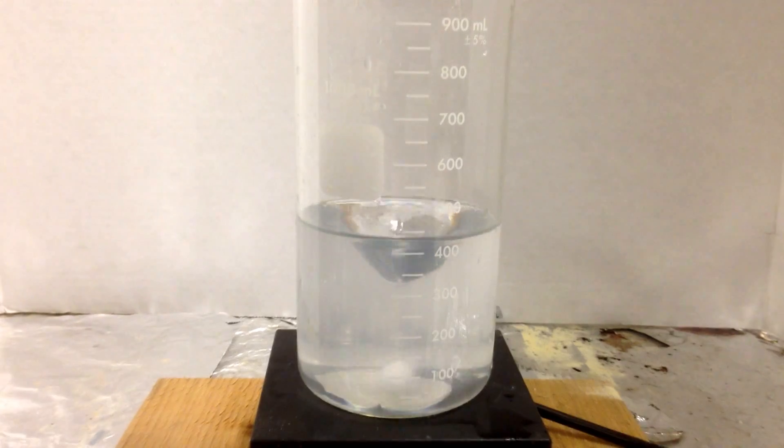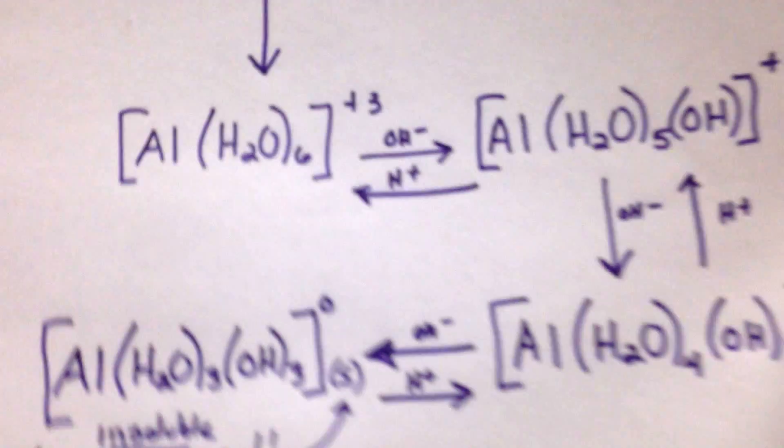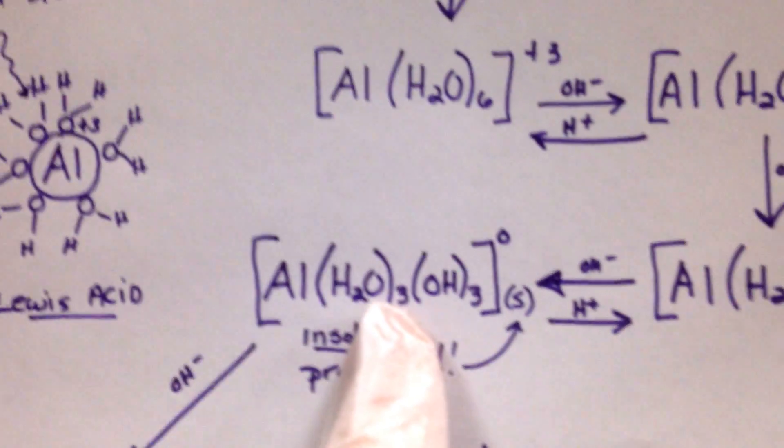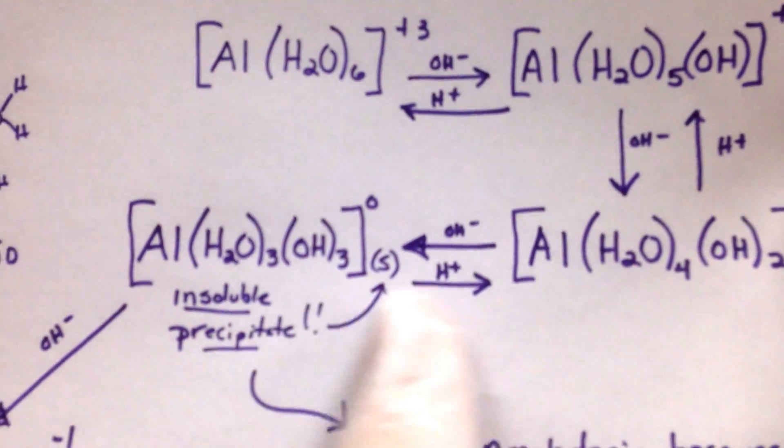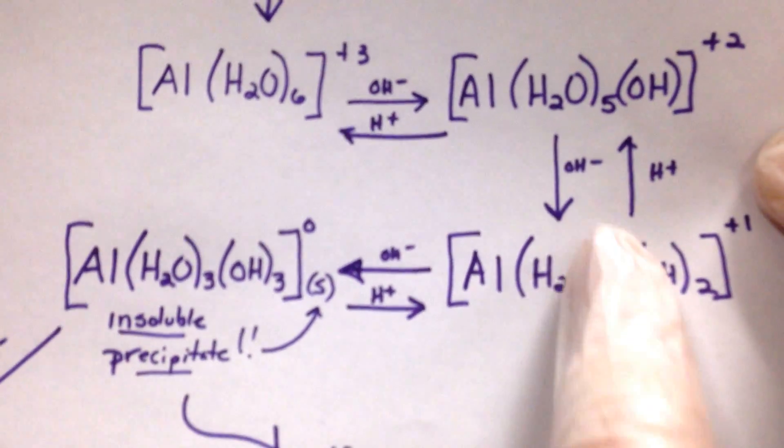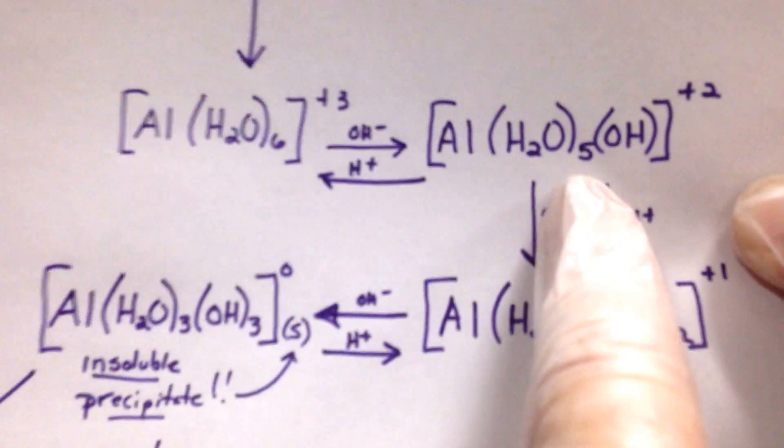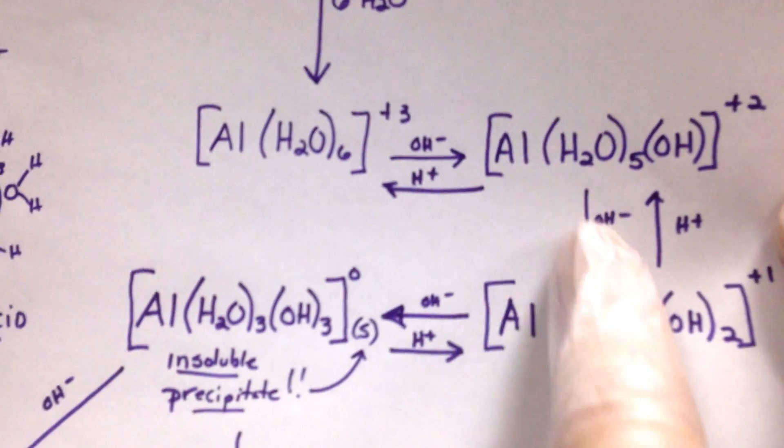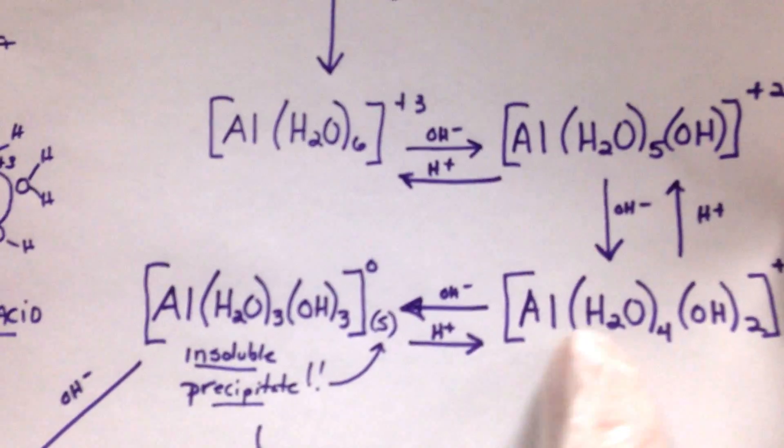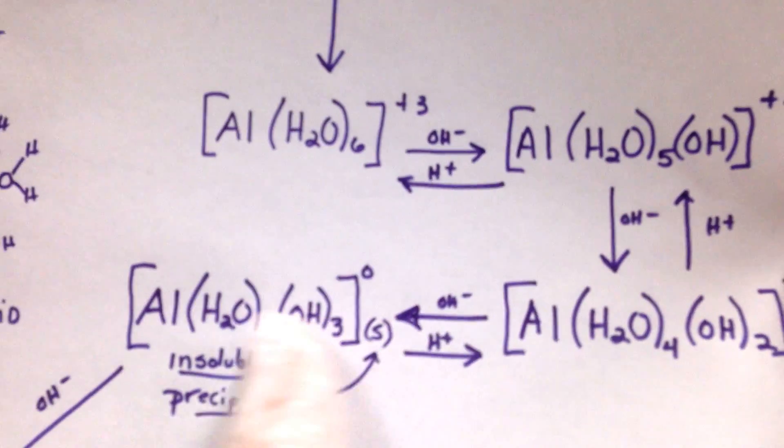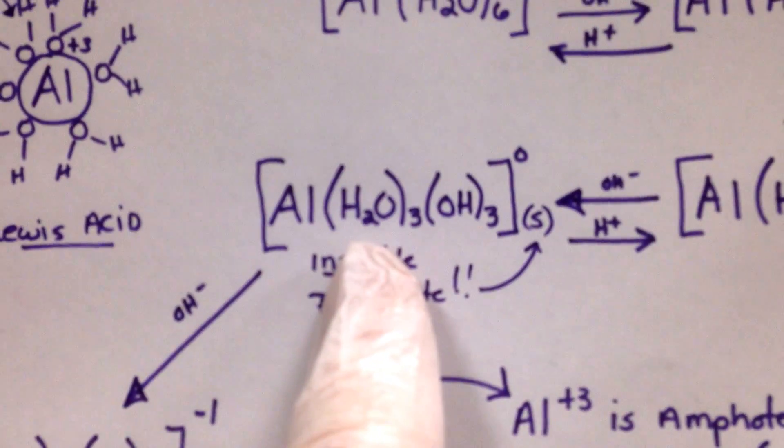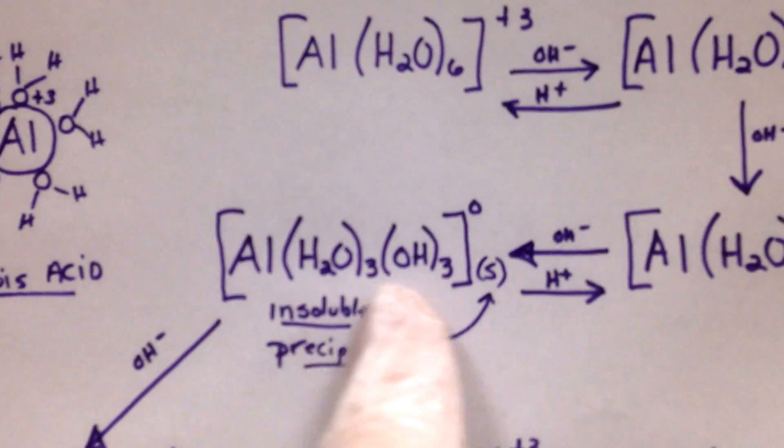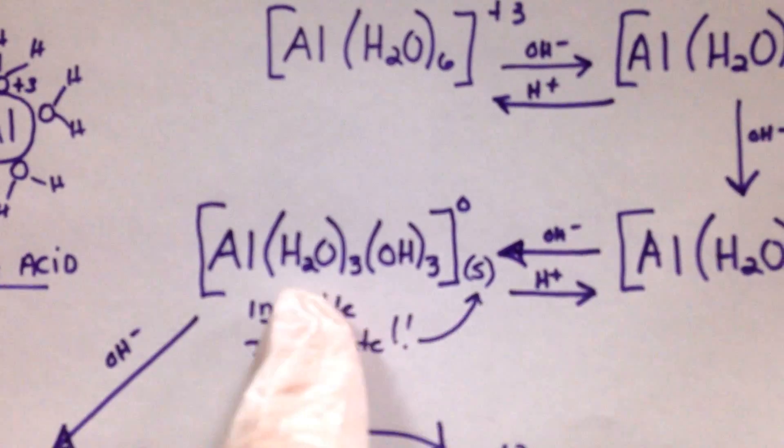From this precipitate here, by adding H+, I'm able to reprotonate those water molecules and make it into a charged compound. Once it's charged, the water can attract it and dissolve it. I'm going back that way. But that's still not what proves amphoteric properties, because most things that are hydroxides, whether they're insoluble or not, are going to be affected by a strong acid.